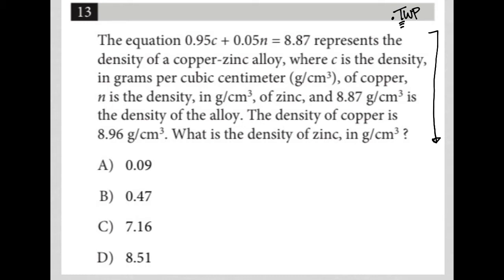The first sentence here says the equation, so I'm going to just write this down because it's quantitative. The equation 0.95C plus 0.05N is equal to 8.87. It represents the density of a copper-zinc alloy, where C is the density.